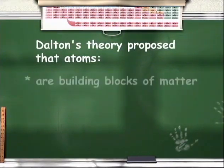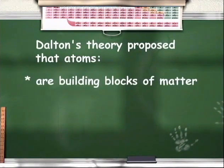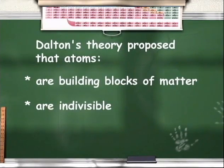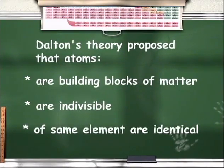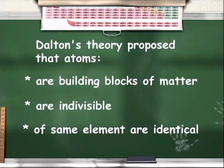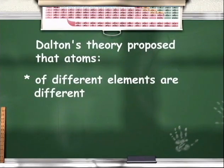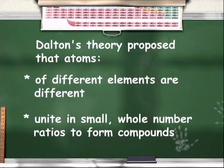Dalton's theory proposed five things: one, atoms are the building blocks of matter; two, atoms are indivisible; three, atoms of the same element are identical; four, atoms of different elements are different; five, atoms unite in small whole number ratios to form compounds.